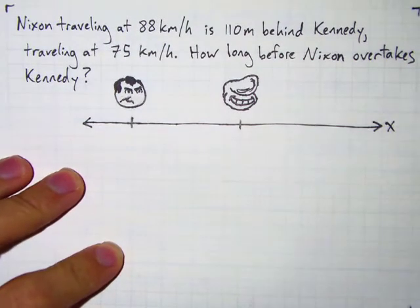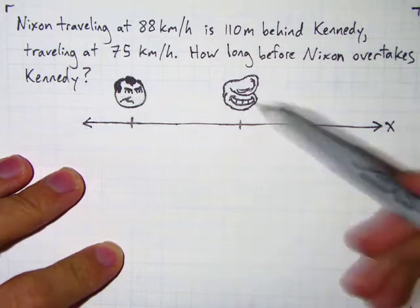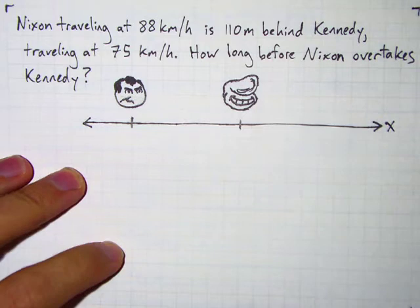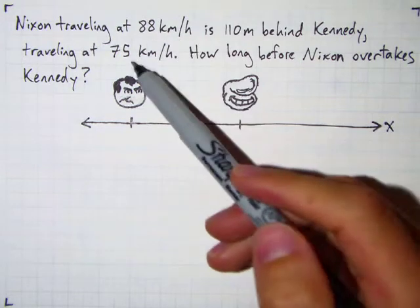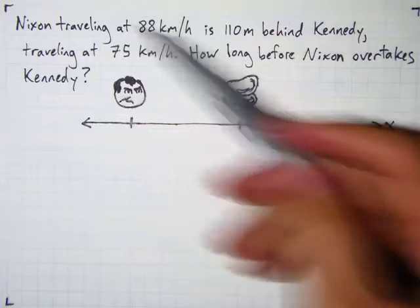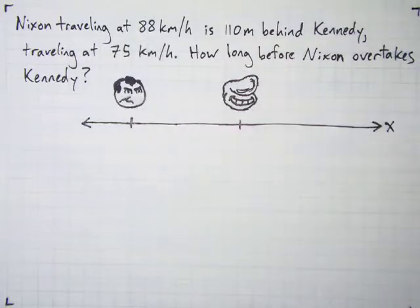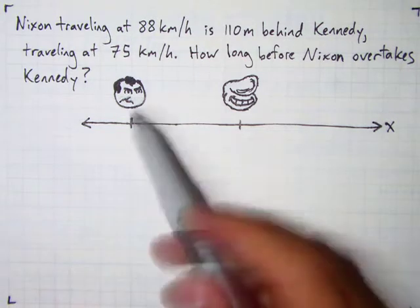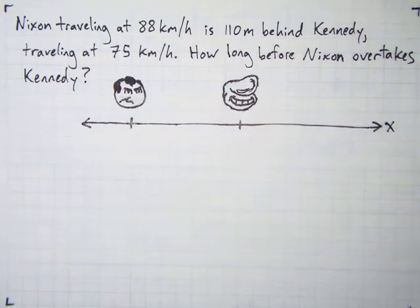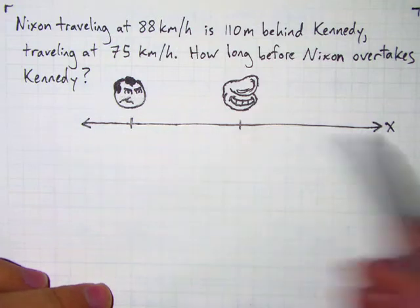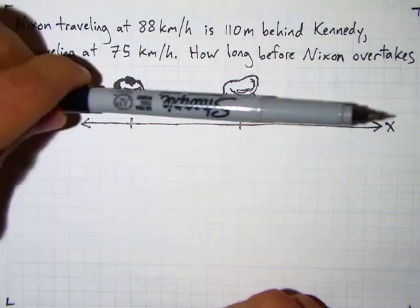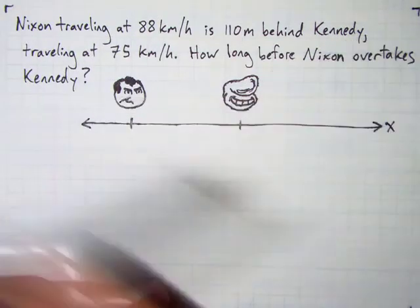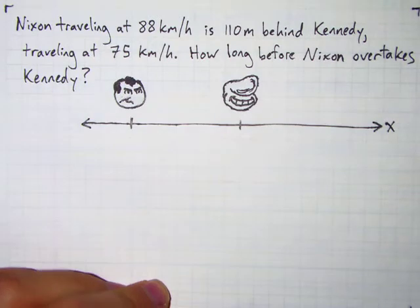Mr. Nixon is traveling at 88 kilometers per hour. He's 110 meters behind Mr. Kennedy, who's traveling at 75 kilometers per hour. How long before Nixon overtakes Kennedy? His speed is greater than Kennedy's speed, so we know he will. If the problem states a speed like this without saying otherwise, we can assume constant velocity, so we know we can use our constant velocity equations. Every time we have a problem to solve, start by drawing a picture. This is a one-dimensional world — there's nothing about different directions, so they're moving in a straight line. I'll pick the right direction as positive.